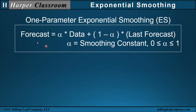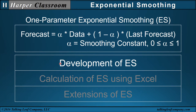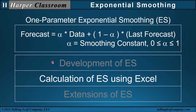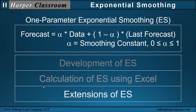In this video, I will focus on one-parameter exponential smoothing where the parameter alpha — the smoothing constant, also called smoothing parameter, smoothing variable, or smoothing number — is used. I will first cover the development of exponential smoothing, including the concepts, mechanics, assumptions, and characteristics, then use Excel to do calculations, and end with extensions of exponential smoothing.